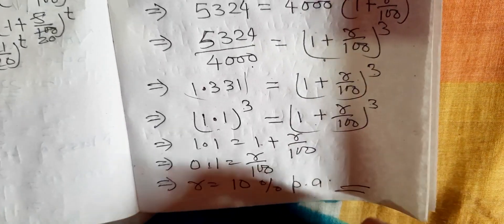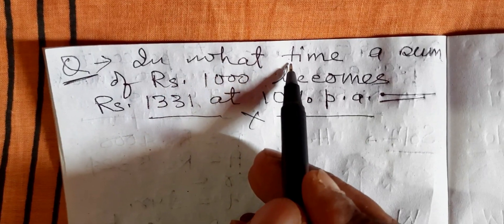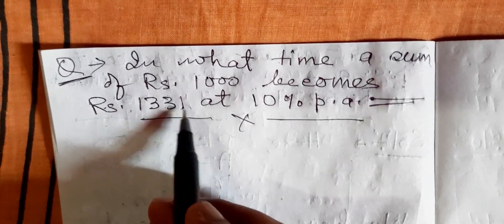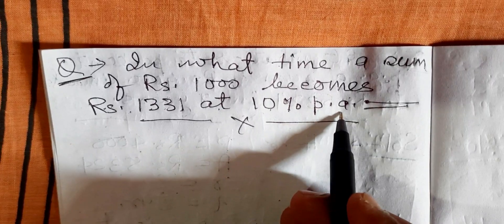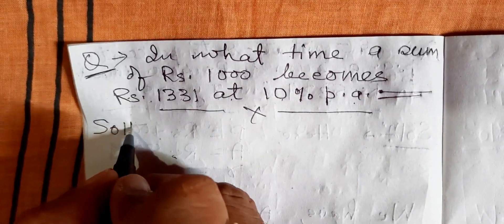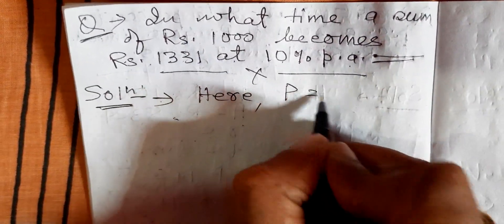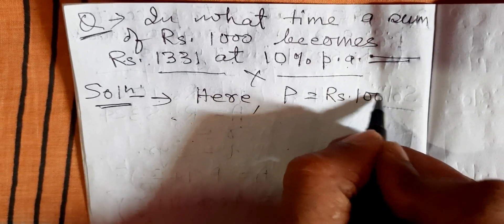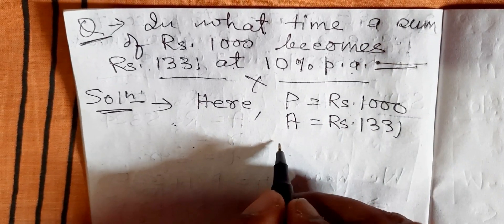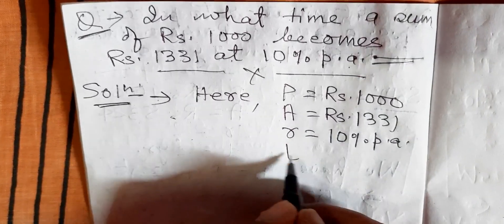Very important question. In what time does a sum of rupees 1000 become rupees 1331 at 10 percent per annum compounded annually? Solution: Here, P is equal to rupees 1000, A is equal to rupees 1331, R is equal to 10 percent per annum compounded annually. T is equal to what?